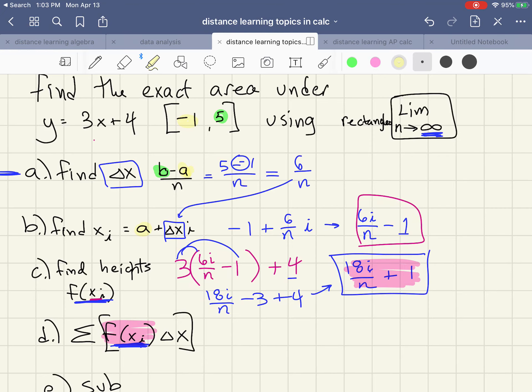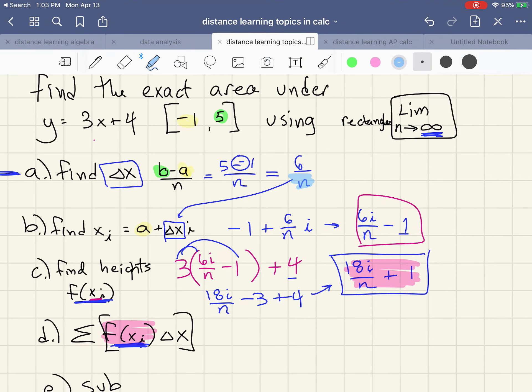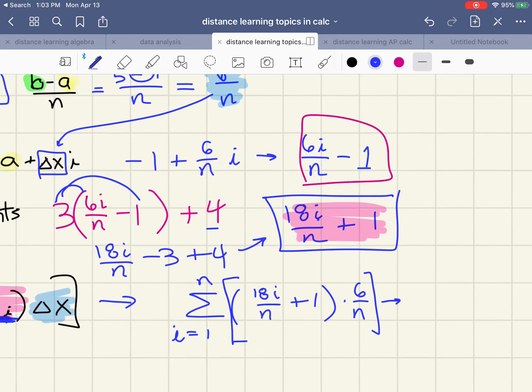So all of this goes here and we already have our width from part a, six over n, that goes in here. So to set up my sigma I have i equals one to n of 18i over n plus one times six over n.